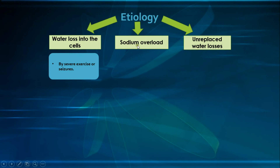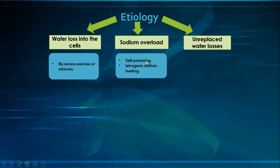The second mechanism is sodium overload, as seen in salt poisoning — accidental or intentional — or iatrogenic sodium loading with hypertonic solutions. Even isotonic solutions such as normal saline can cause hypernatremia in certain conditions, such as a patient with hypotonic fluid loss from osmotic diuresis due to hyperglycemia, mannitol, or a patient recovering from azotemia where urea causes osmotic diuresis, or after nasogastric suction.